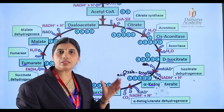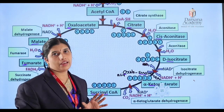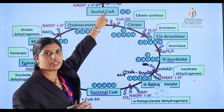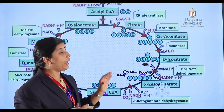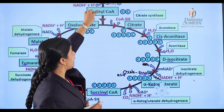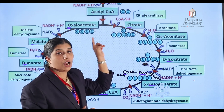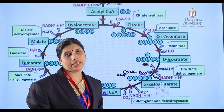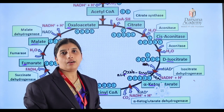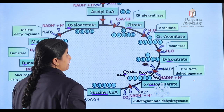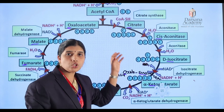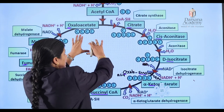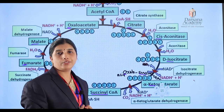During the Krebs cycle, food is completely broken down. Acetyl coenzyme A is the form of food that participates in the Krebs cycle. During one Krebs cycle, one acetyl coenzyme A is completely broken down. Two acetyl coenzyme A molecules are formed from the breakdown of two molecules of pyruvic acid, but one acetyl CoA is broken down per Krebs cycle. Ten compounds are formed during this cycle.